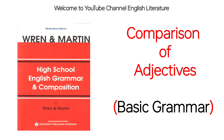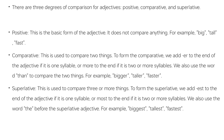When we compare two things, we use the Comparative Form. When we compare three or more things, we use the Superlative Form.